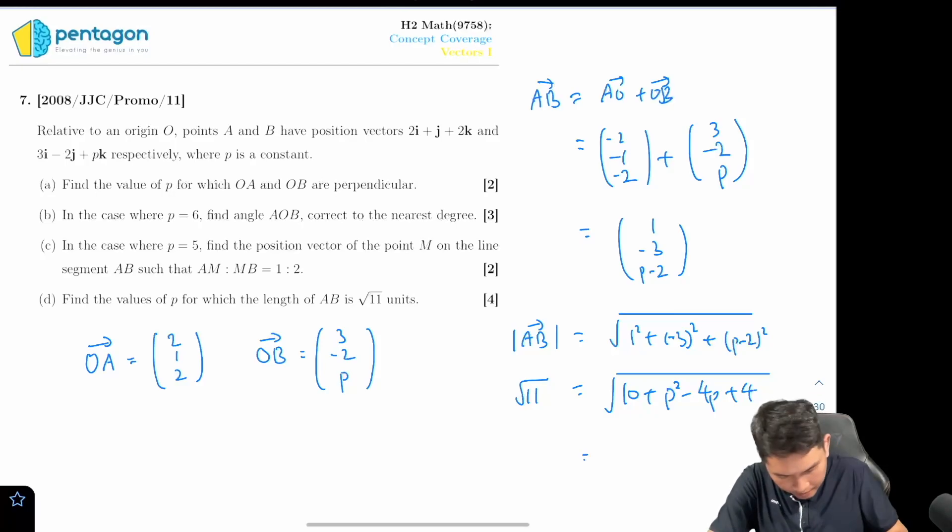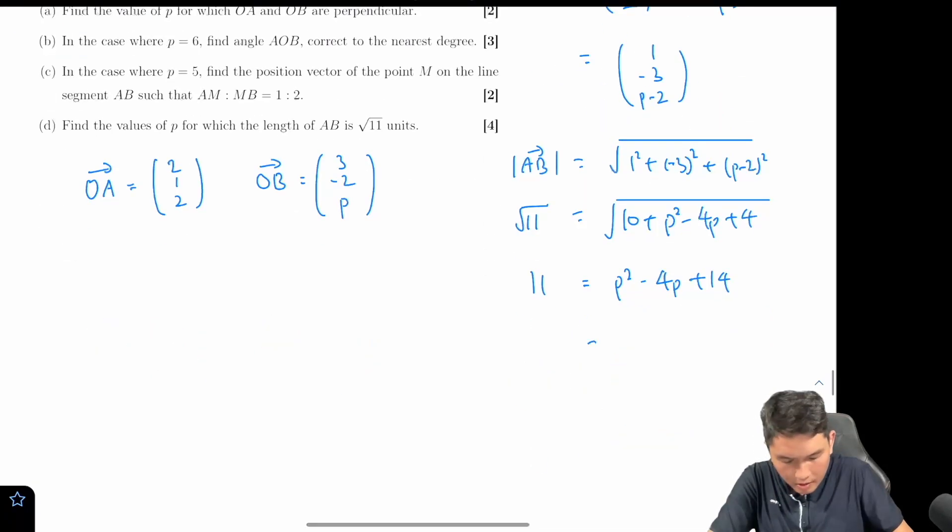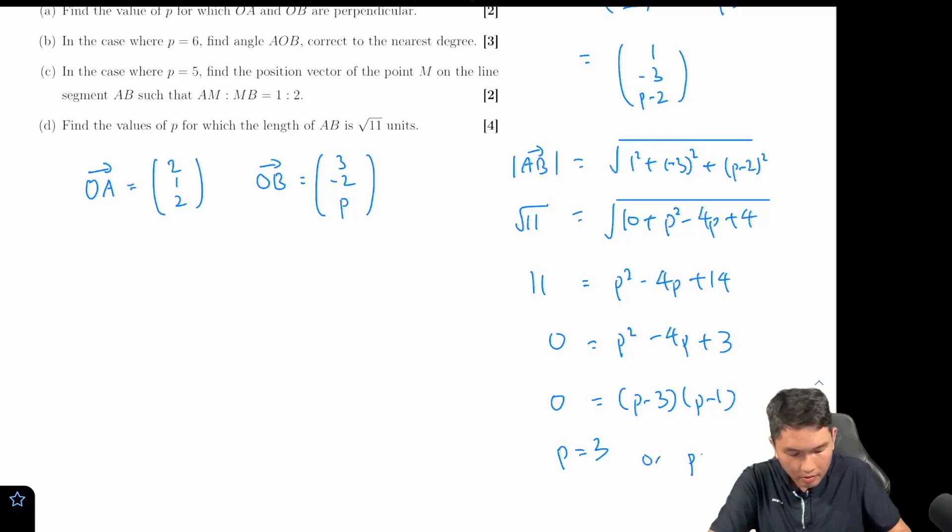So 11 must be equal to this, and then the next step, we can factorize this, which tells me p is equals to three or p is equals to one. So these are the two values for which the length of AB will be square root of 11, and that's the answer for part d.